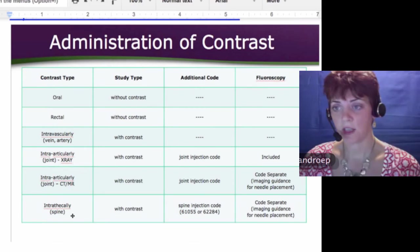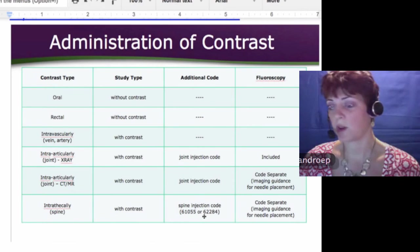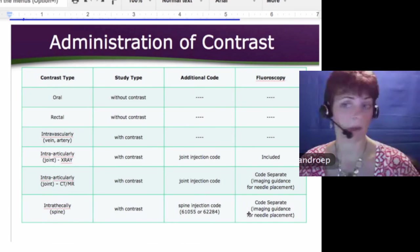And then finally, intrathecally for the spine with contrast, you can use one of these two codes, 61055 or 62284 to get credit for that needlework, and you're also allowed to code the fluoroscopy separately.